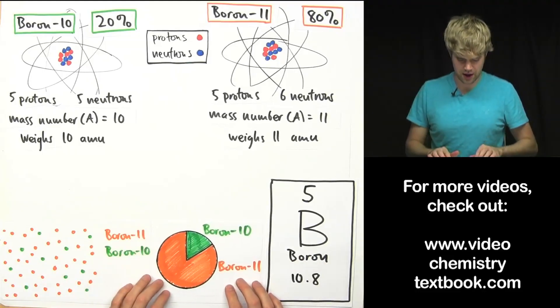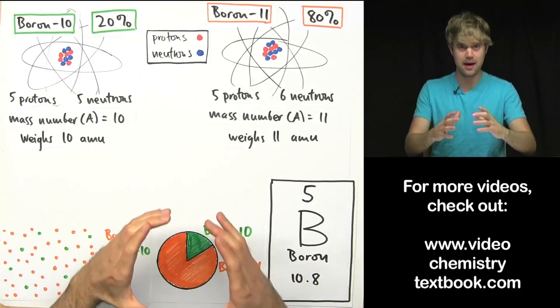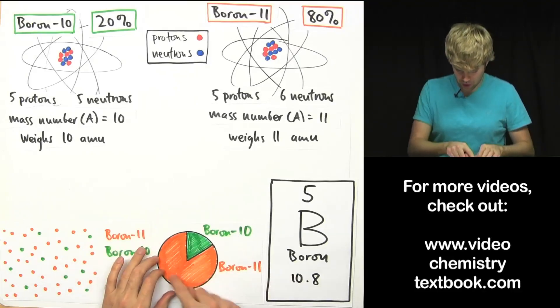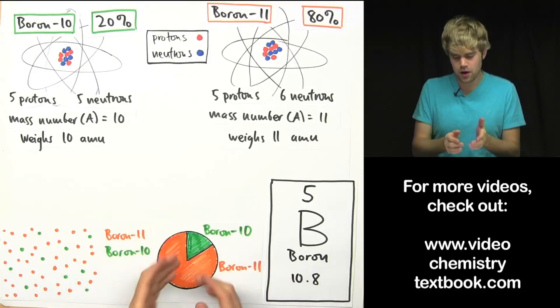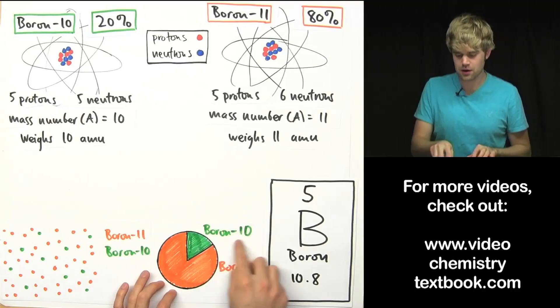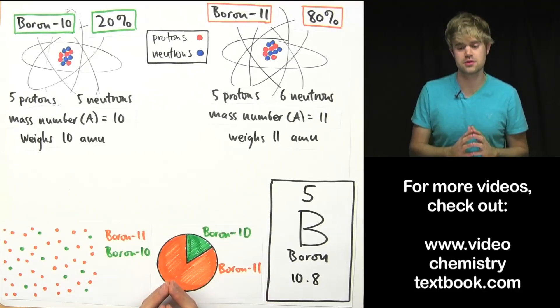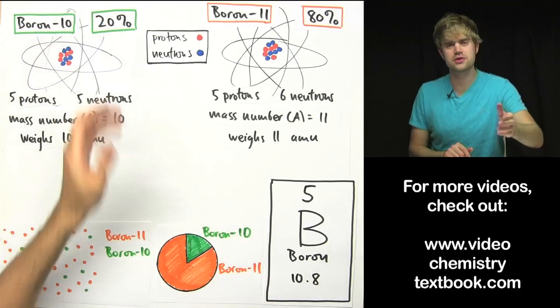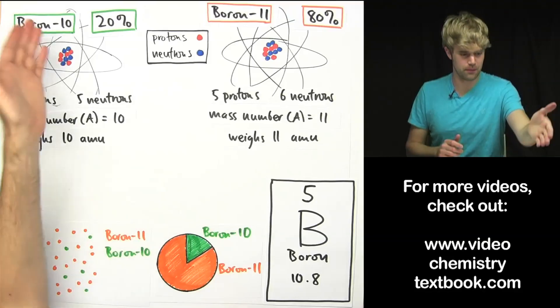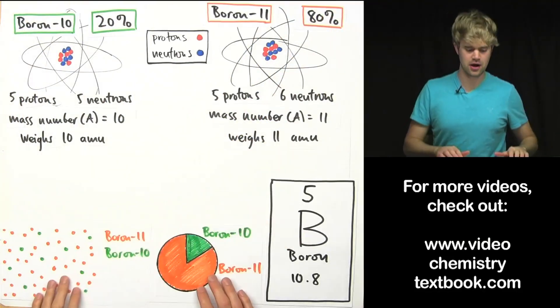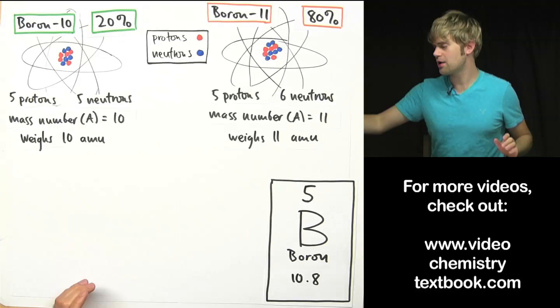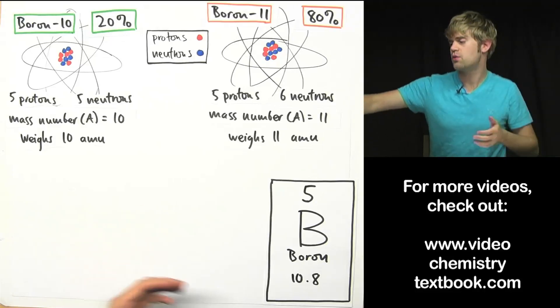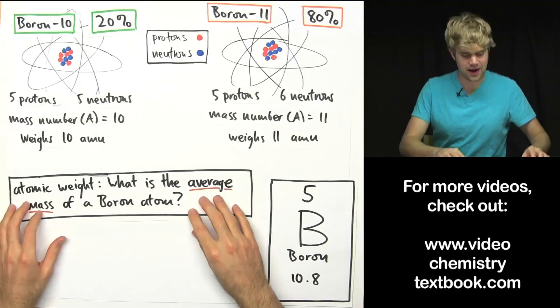We can look at what this looks like on a pie graph just to get a better idea of boron-11 taking up all this room as opposed to the small amount of boron-10 atoms. So 20% of the atoms of boron are boron-10, 80% of the atoms of boron are boron-11. This leads us right to the question that atomic weight asks.